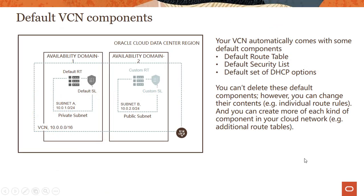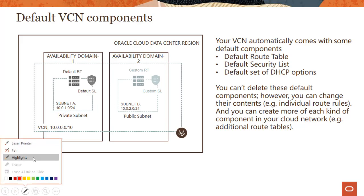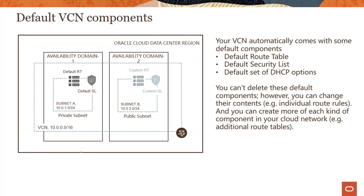First, this comes up in the exam as well. Your VCN automatically comes with some default components: there is a default route table, a default security list, and a default set of DHCP options. We have been using some of these until now — the default route table and the default security list. We have not really looked into the default set of DHCP options.